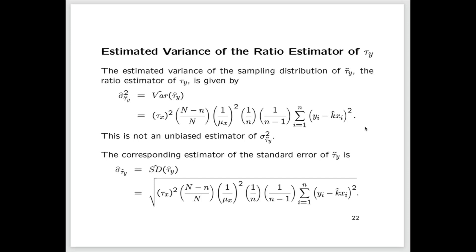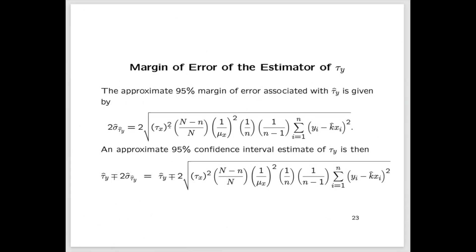Once we have the estimated standard error, we multiply it by two — two times σ̂_{τ̂_y} — to obtain the approximate, estimated 95 percent margin of error associated with τ̂_y. We then use that together with the point estimator τ̂_y to get the approximate 95 percent confidence interval for the total of the y values across the entire population: τ̂_y plus or minus the estimated margin of error.